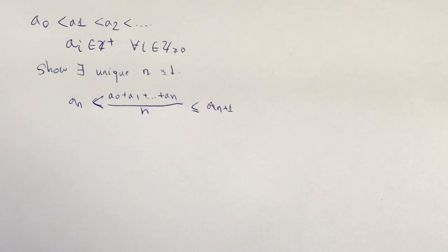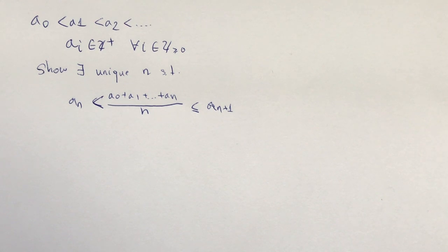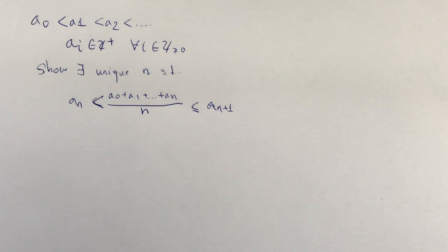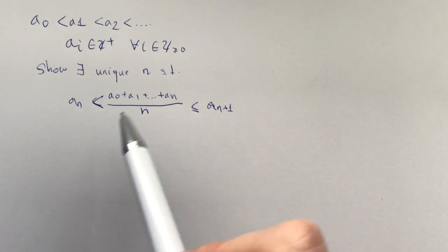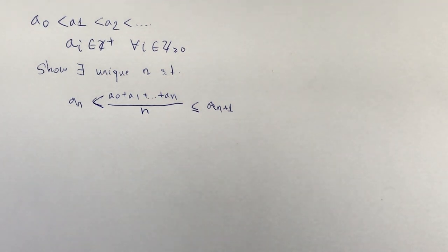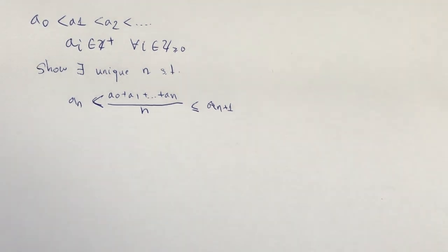There is really not much to summarize here — you just read the problem and that's your summary. What we have is a strictly increasing sequence of positive integers, and we need to show that there exists a unique n such that a_n is between the sum from a_0 to a_n divided by n, and it's less than or equal to a_{n+1}. The approach here is looking at what happens with small n.